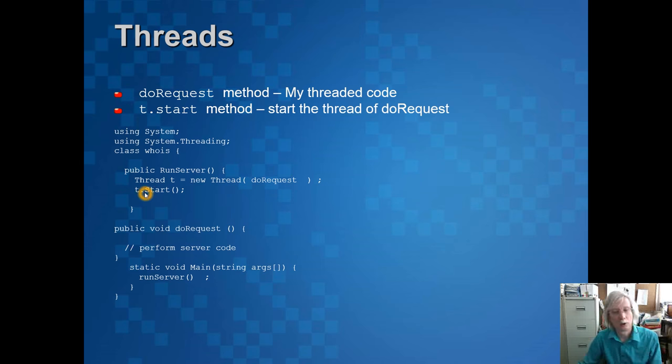We start that thread running with t.start which initiates a concurrent version of the doRequest, and then it can immediately go up and perhaps make another thread with another doRequest in it. We can have many of these running at the same time. Code is quite simple for threading something like a concurrent version of doRequest.